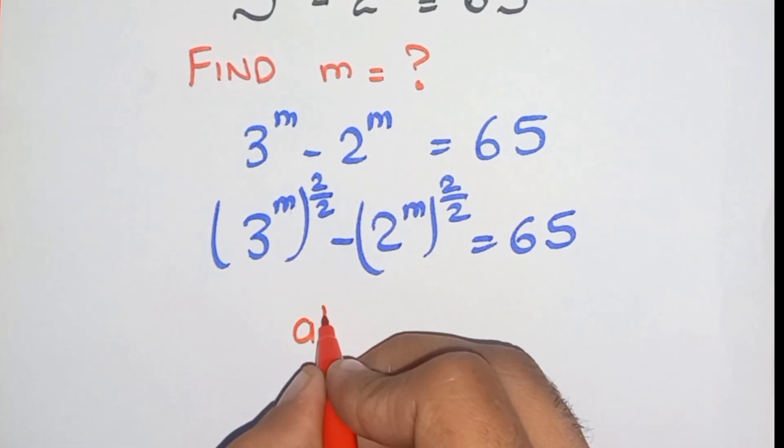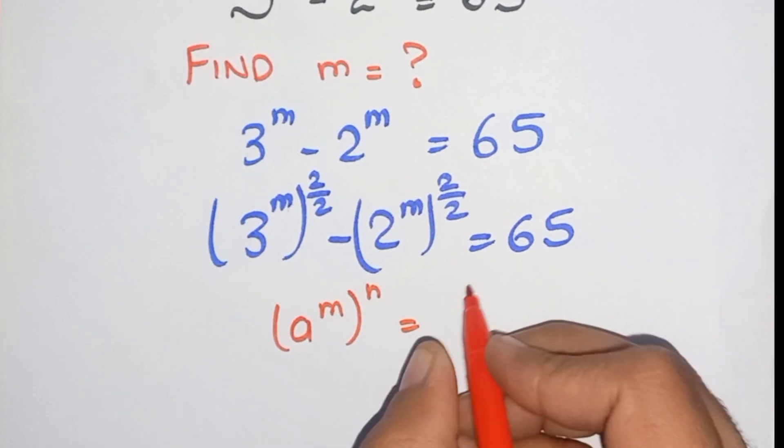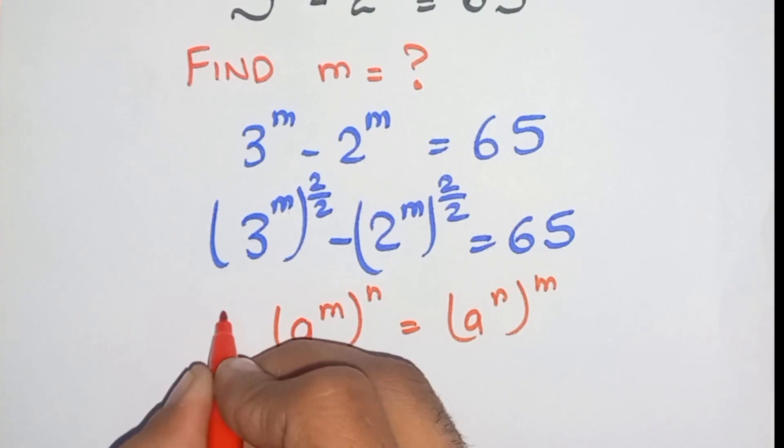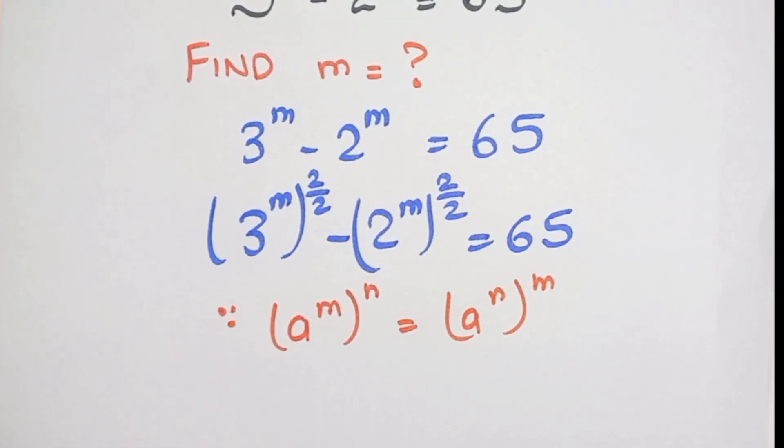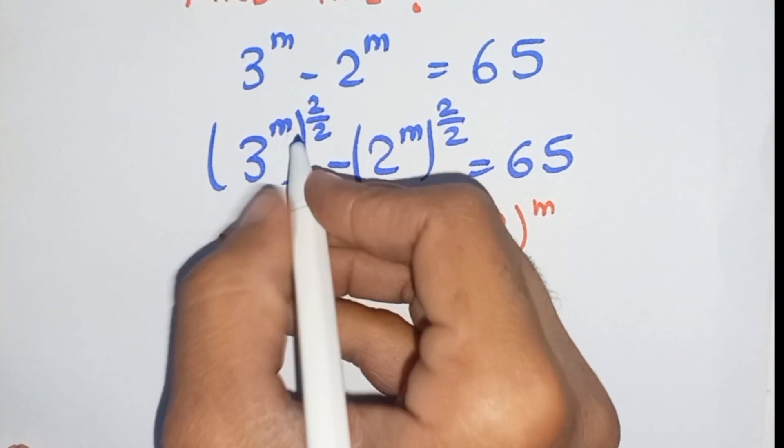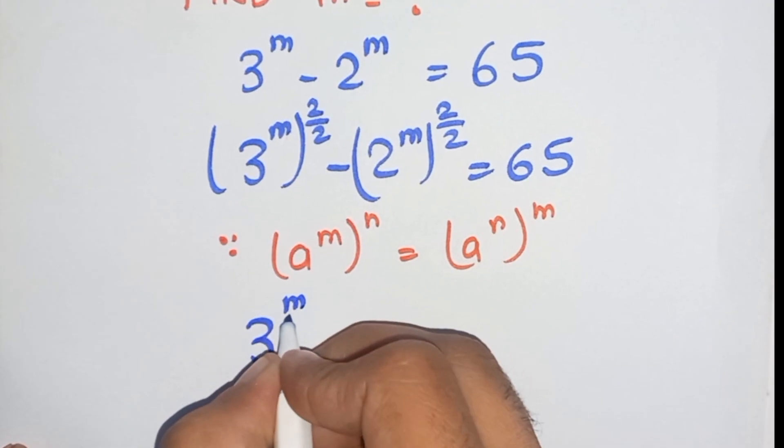a^m power n equals a^(n/m), we know that. So now apply it here. As we applied here, we conclude that 3^(m/2) squared minus 2^(m/2) squared equals 65.